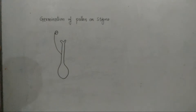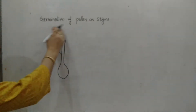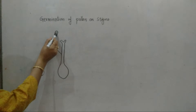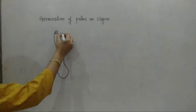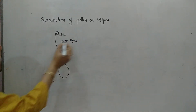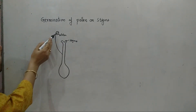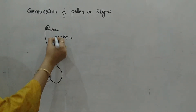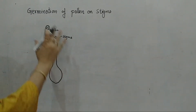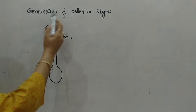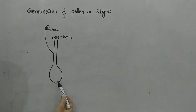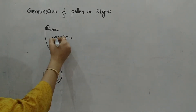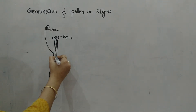In this video we are going to discuss germination of pollen on stigma. The filament has the anther attached, which transfers pollen to the stigma — this process is known as pollination, which can occur by air, water, insect, or any other means. The pollen attaches to the stigma, and then a pollen tube is formed. This is the whole process of germination of pollen on stigma.